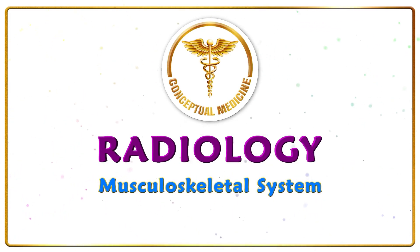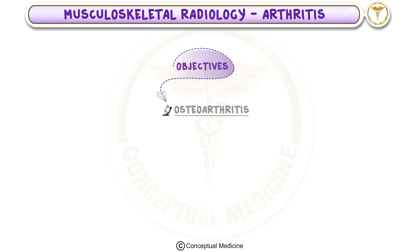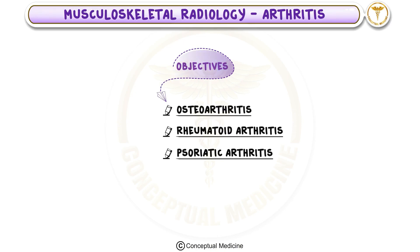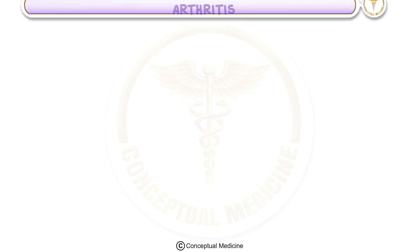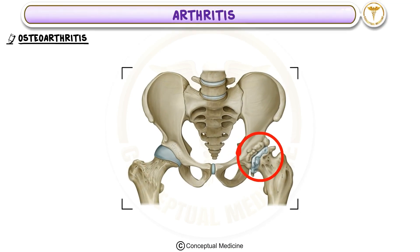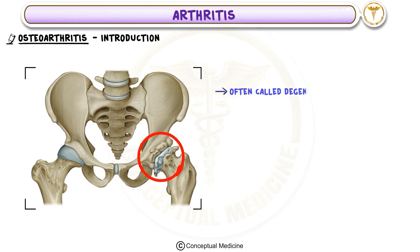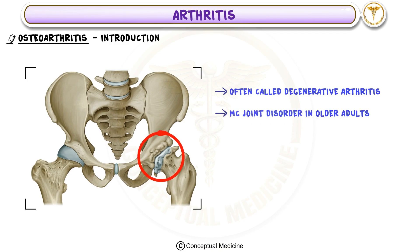Musculoskeletal Radiology: Arthritis and Osteoarthritis Introduction. Osteoarthritis, often called degenerative arthritis, is the most common joint disorder, especially in older adults. It is caused by wear and tear on the joints over time.